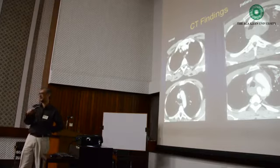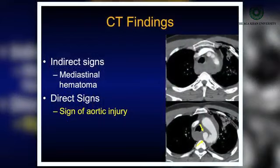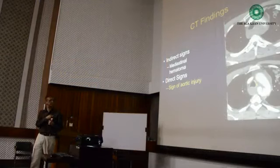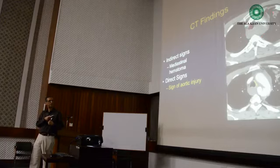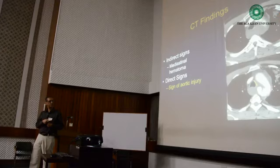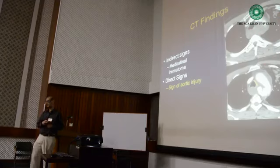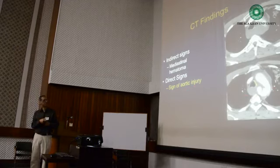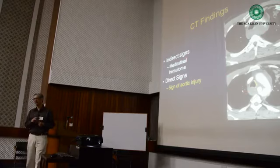We suspect aortic injury on chest x-ray and confirm on CT scan. The indirect sign is a mediastinal hematoma; the direct sign is visible aortic injury showing the exact site of rupture. If the direct sign is found, it is more helpful as it pinpoints the rupture, but even the indirect sign alone should raise the possibility of aortic rupture.